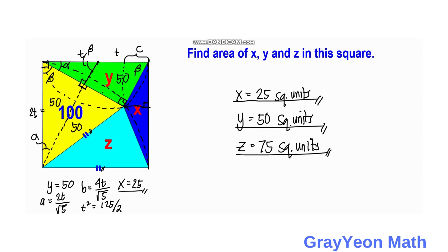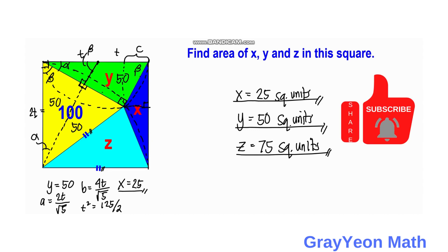To summarize: the value of X is 25 square units, Y is 50 square units, and Z is 75 square units. Those are our answers for the values of X, Y, and Z.